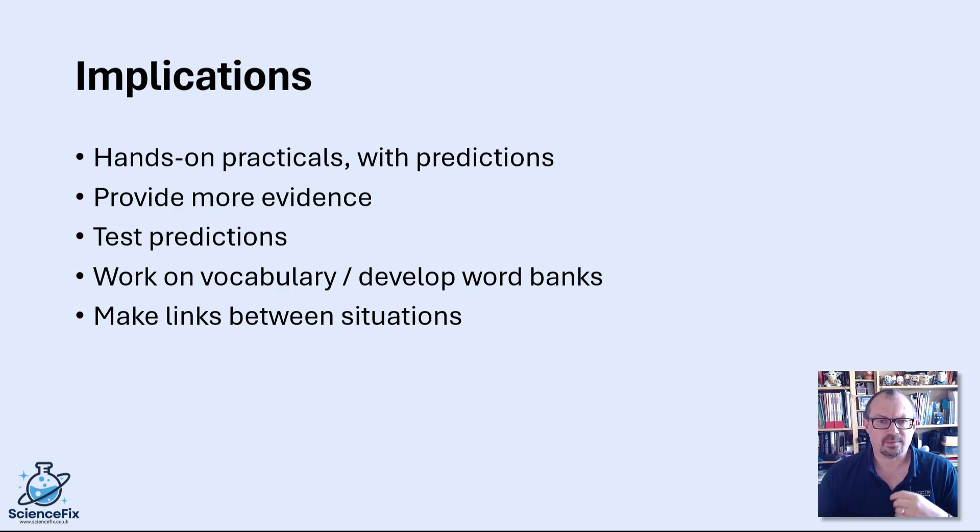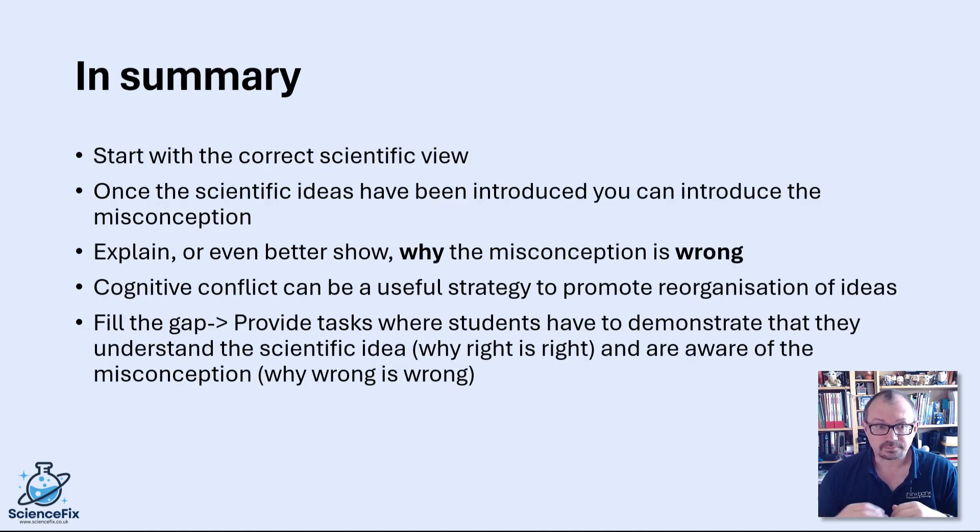So in summary we should be looking at starting with the correct scientific view. Once scientific ideas have been introduced then we can introduce misconceptions, explain or even show why the misconception is wrong, then we provide cognitive conflict as a strategy to promote that reorganization of the ideas. And then we need to fill in the gaps. We provide tasks where the students have to demonstrate they understand the scientific idea, so they can demonstrate why right is right, and so they're aware of the misconception, why wrong is wrong.